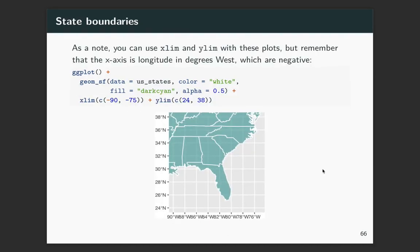As a note, you can also use xlim and ylim to change the boundaries of your plot. You just need to remember that for the U.S., if you're plotting the U.S., latitude is in degrees west, which are actually negative. So you need to make sure you put these as negative values. And you can see here when we do that, we're getting just a slice of the full map.